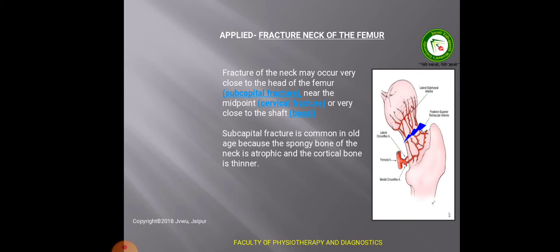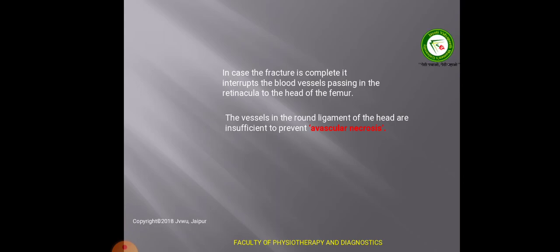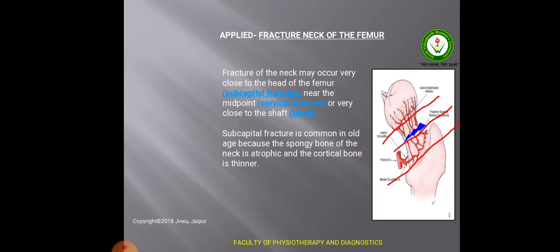Moving to the applied anatomy: fracture of the neck of femur is very common. It is common in old age because the spongy bone of the neck is atrophic and the cortical bone is thinner. It is of three types: subcapital, cervical, and basal. If the fracture is close to the head it is subcapital; at the midpoint of the neck it is cervical; and close to the shaft it is a basal fracture. If the fracture is complete, it causes interruption of the blood vessels passing through the retinacula to the head, leading to avascular necrosis of the head of the femur.